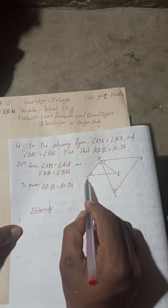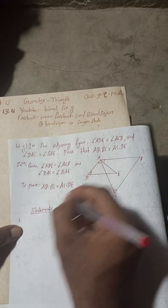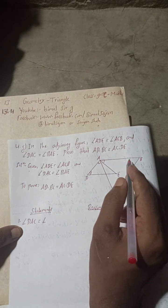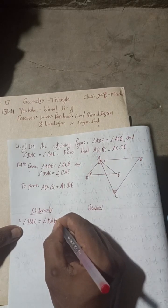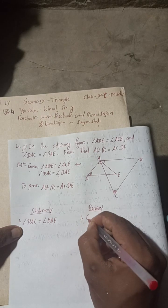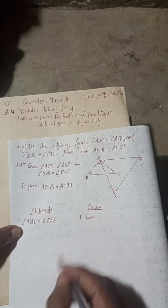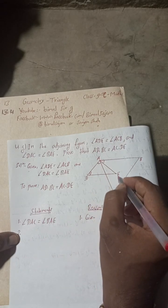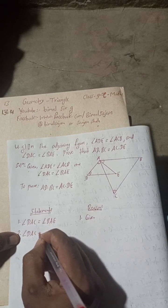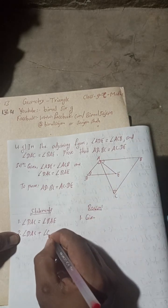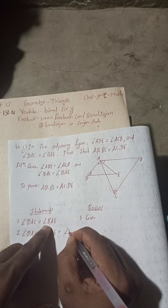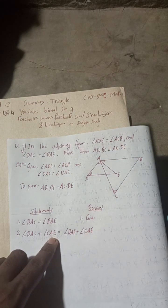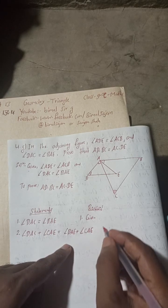Statement 1: angle DAC is equal to angle BAE — this is given. Statement 2: adding the common angle CAE to both sides, angle DAC plus angle CAE is equal to angle BAE plus angle CAE. The reason is: adding angle CAE to both sides.